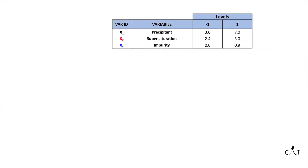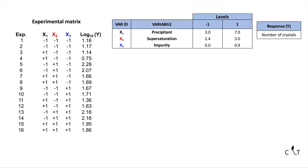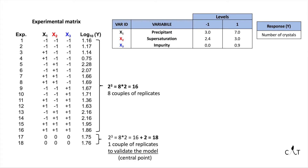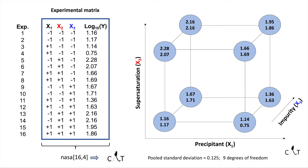Here is our experimental matrix, coded with our levels, with the response. There are 8 experiments with a replicate each, for a total of 16 experiments. In order to validate the model, a couple of experiments at the central point have been performed. The replicates are fundamental to estimate the experimental variability. In this case, we have to use the pooled standard deviation, with a result of 0.125 with 9 degrees of freedom. We are going to load this experimental matrix of 16 rows, then calculate the coefficient significance using the experimental variability with 9 degrees of freedom.